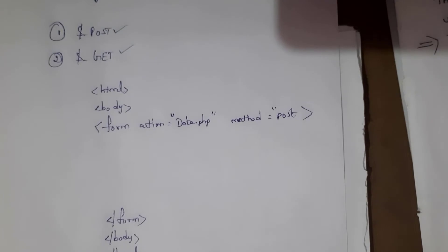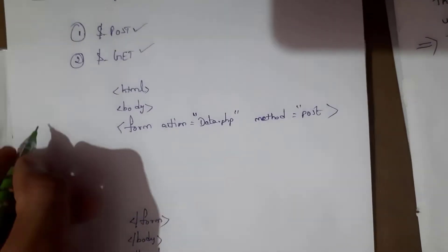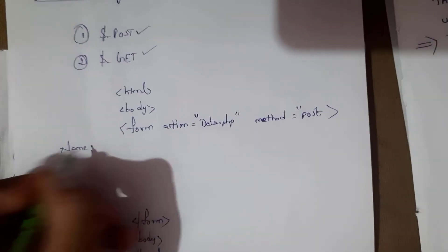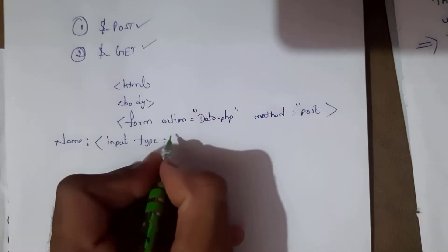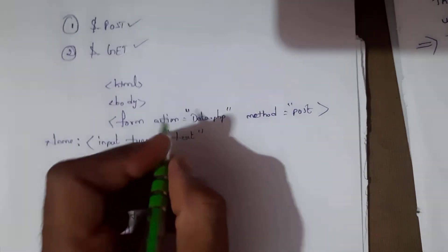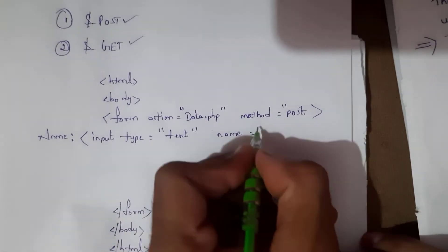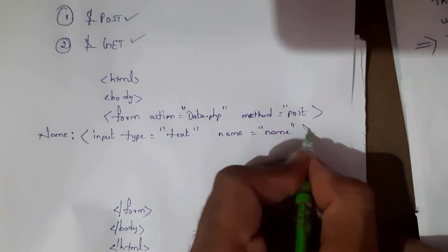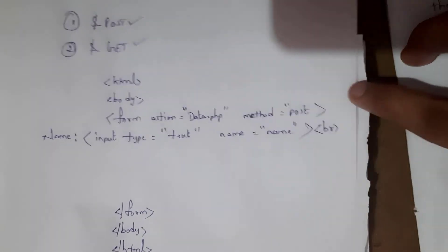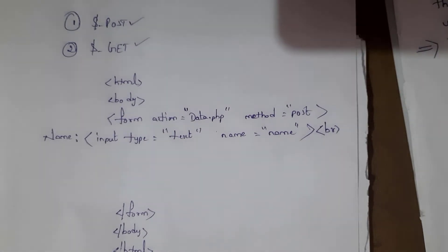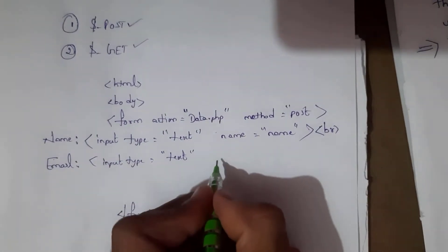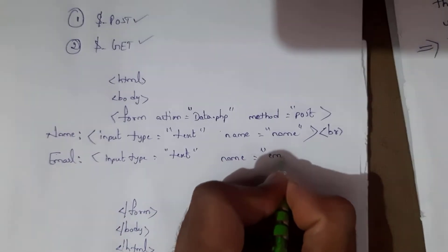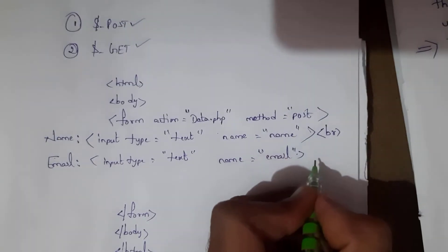Here I am going to create a form that contains username and email address. So for name: input type is text and I am going to define name as 'name'. Then I add a break tag. Next one is email: input type is text and I am going to give the name as 'email'. Then I add another break tag.